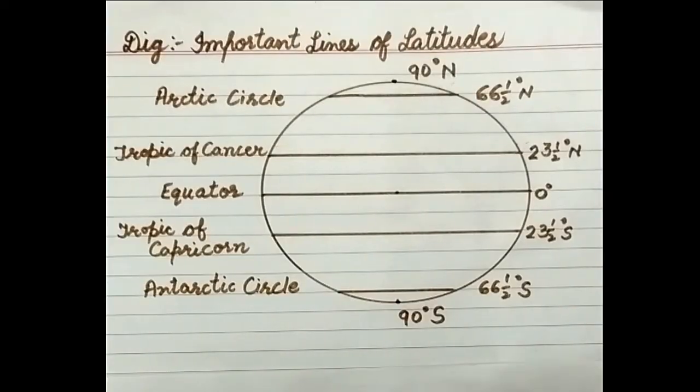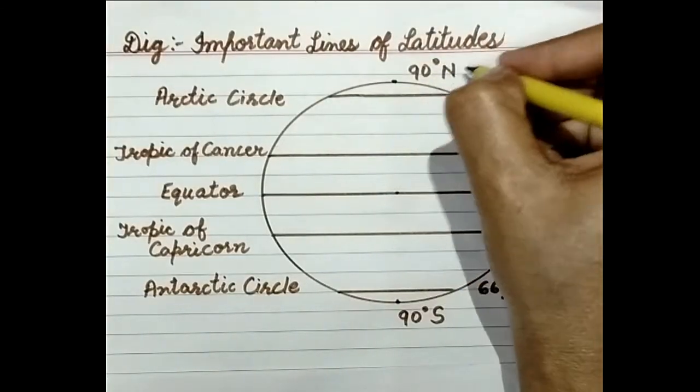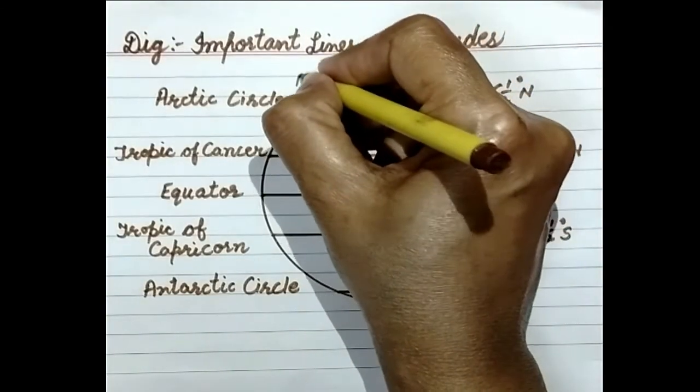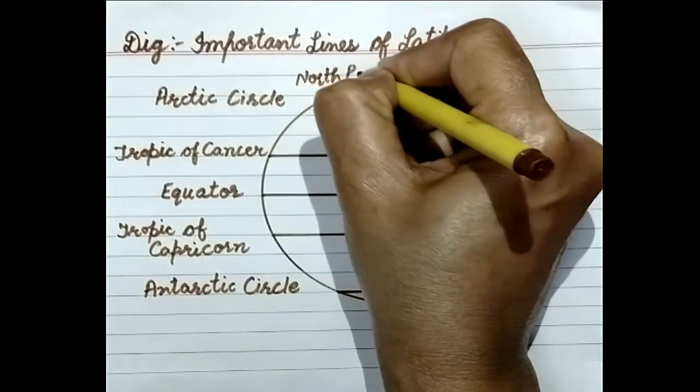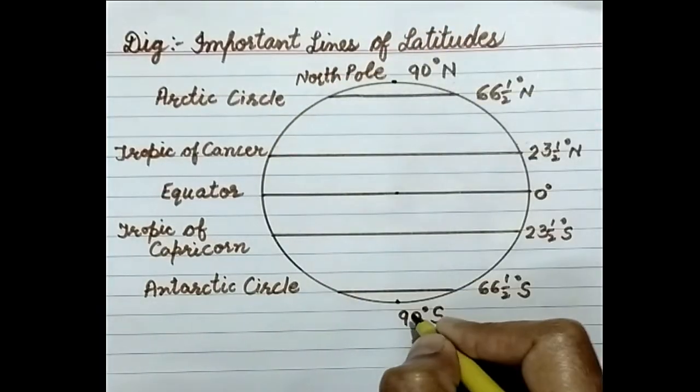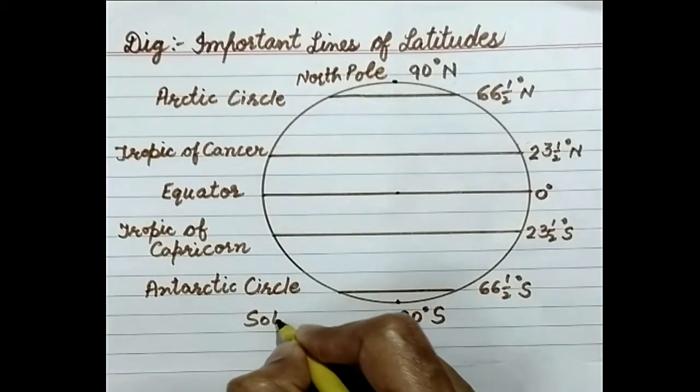90 degree north is the North Pole. 90 degree south is the South Pole.